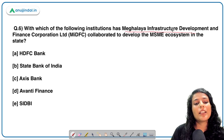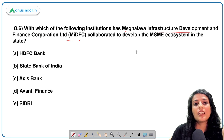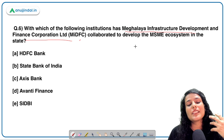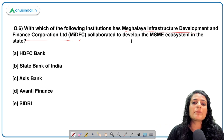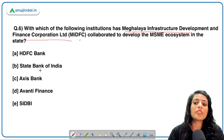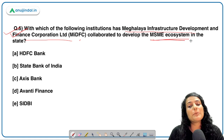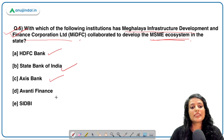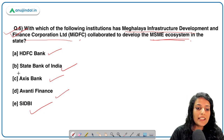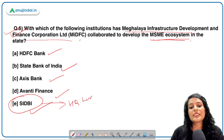Next question: Meghalaya Infra Development and Finance Cooperation — which bank collaborated for infrastructure development, with a key thrust on developing the MSME ecosystem? Options are HDFC Bank, State Bank of India, Axis Bank, Avanti Finance, and SIDBI. The correct answer is SIDBI — Small Industrial Development Bank of India — headquartered in Lucknow, Uttar Pradesh.